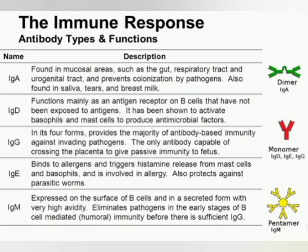You can remember the immunoglobulin types with this code: GAMED — IgG, IgA, IgM, IgE, and IgD. First, immunoglobulin A comprises about 10 to 15 percent of the antibodies present in our body. It is found in areas of the nose, bleeding passages, digestive tract, ears, eyes, and vagina.